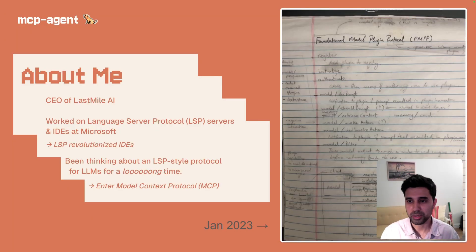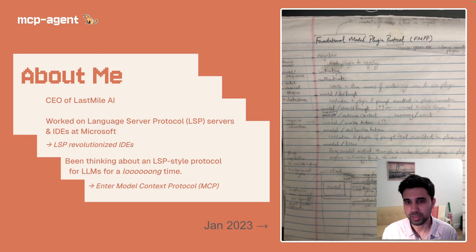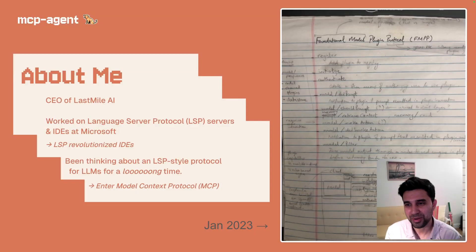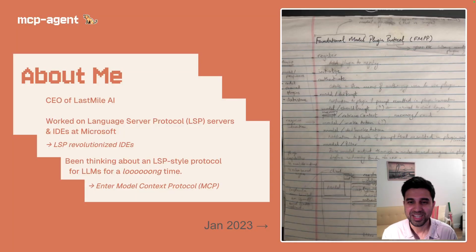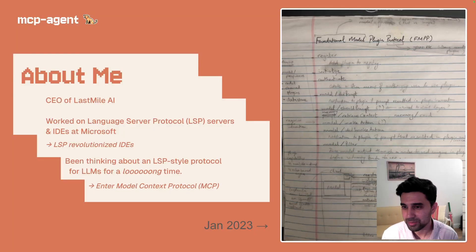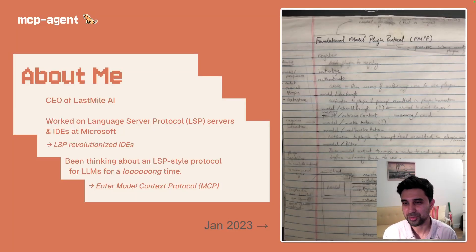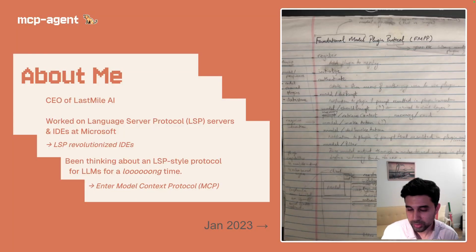When LLMs took off, even before tool calling was a thing, I had been thinking about what it would take to make an LSP-style protocol for LLMs. Here you have a scratch pad from 2023, the era of ChatGPT plugins, where I was thinking about how agent authentication should work, or how LLMs should be connected to tools, resources, and data. Model Context Protocol, which Anthropic created a few months ago, has been a godsend. It incorporates a lot of what's necessary to get agents into production.